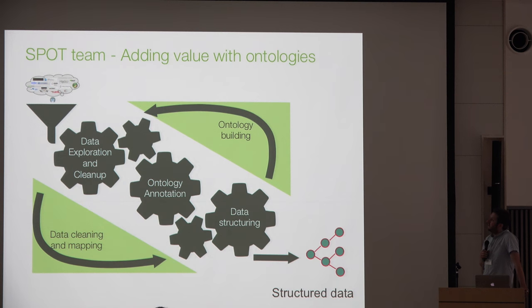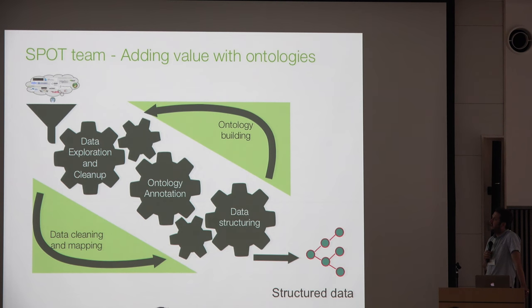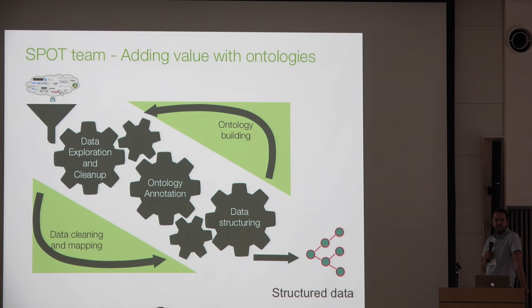There's a cycle here where we do ontology mapping — we try to map data to existing vocabularies and ontologies — and then we do ontology building. This feeds back into a loop so we can go back and re-curate data that's been done before as we extend the ontologies and so on.